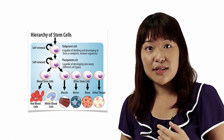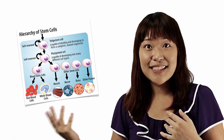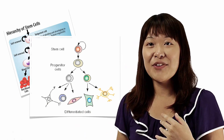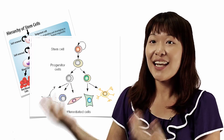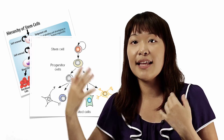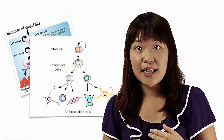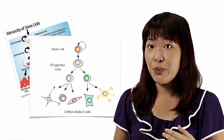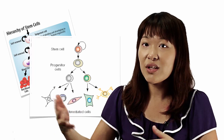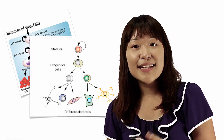Notice that there are progenitor cells in the intermediate process. Progenitor cells are often confused with stem cells, but unlike stem cells, progenitor cells are only able to differentiate — they are unable to self-renew. In scientific terms, progenitor cells are just considered to be more differentiated than adult stem cells.